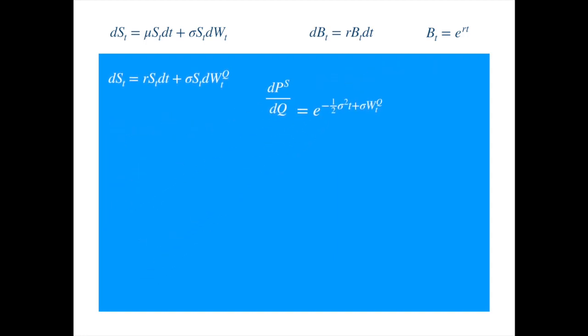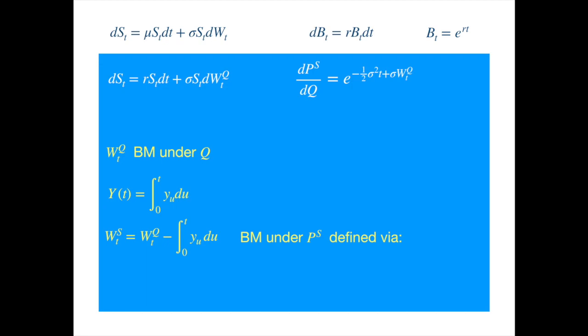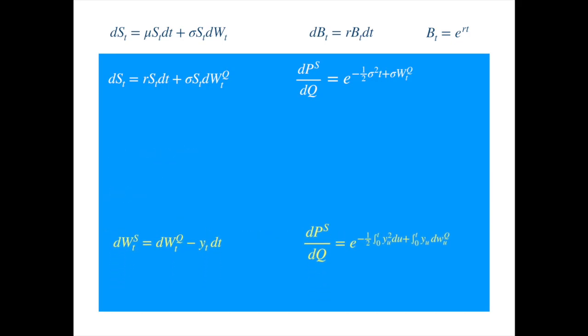Now, let's recall the Cameron-Martin-Girsanov theorem. If WQ is a Brownian motion process under the probability measure Q, and we shift the process by Y, then the shifted process must be a Brownian motion under the measure PS, which can be identified through its density or its derivative with respect to the old measure. We could equally write the relationship between the two Brownians in differential form as follows. Comparing the derivative at hand with the Radon-Nikodym of the Cameron-Martin-Girsanov theorem, we see that the function Y in the Girsanov theorem equals a constant, which is sigma. We write the relationship between the two Brownians as follows.